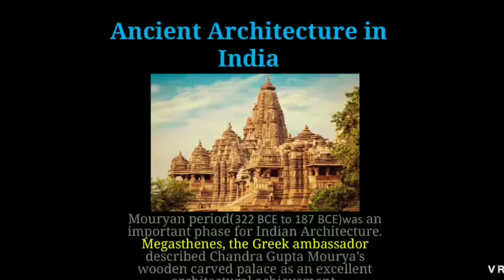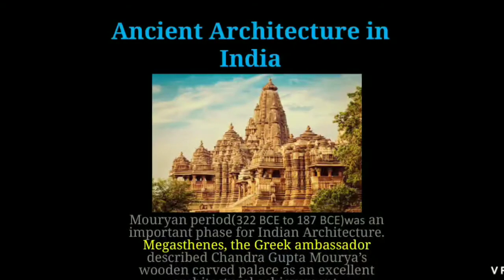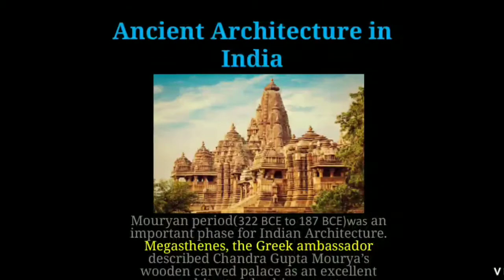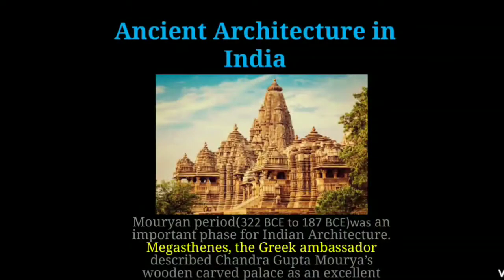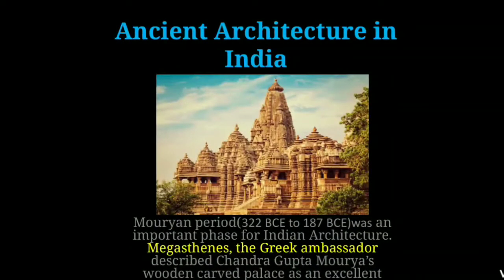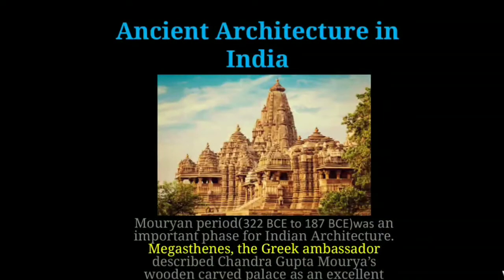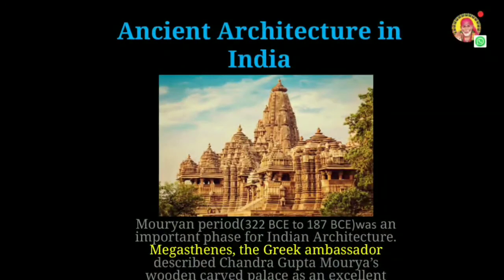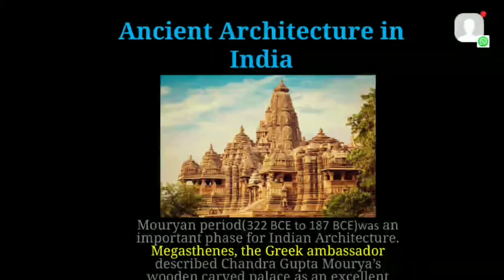If we have to speak about ancient architecture in India, we need to start with the Mauryan period, which is from 322 BCE to 187 BCE. It is an important phase for Indian architecture. Megasthenes, the Greek ambassador, described Chandragupta Maurya's wooden carved palace as an excellent architectural achievement. This compliment is considered one of the highest, since Greek architecture was always regarded as among the most qualitative.